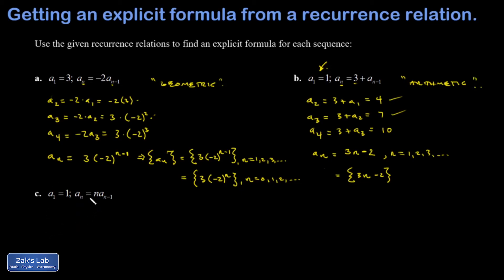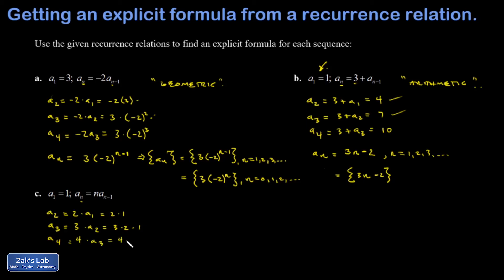Problem c is neither geometric nor arithmetic. Expanding it: plug in n = 2 to get 2 · a₁ = 2 · 1. Then a₃ = 3 · 2 · 1, and a₄ = 4 · a₃ = 4 · 3 · 2 · 1. The pattern is clear — these are factorials. So a₄ = 4!, a₃ = 3!, and in general aₙ = n!.